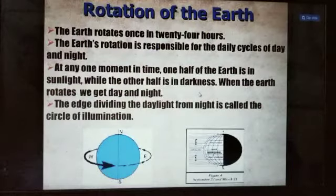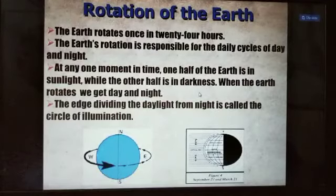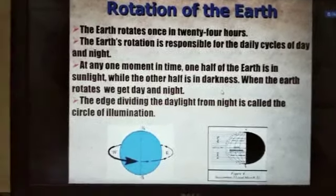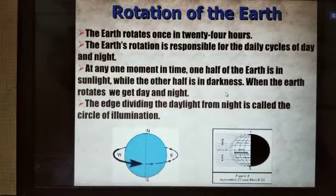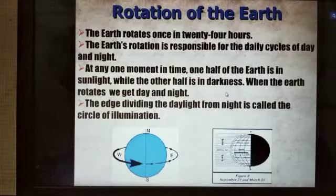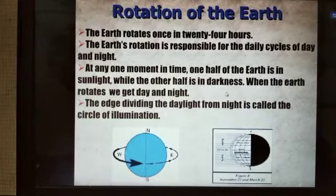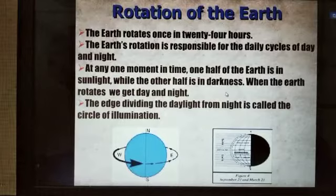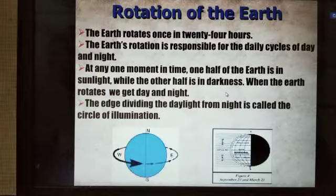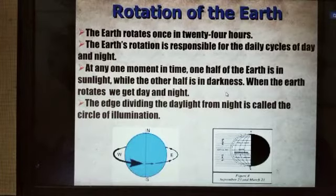Rotation of Earth: it rotates once in 24 hours. It is responsible for the daily cycles of day and night. At any one moment in time, one half of the Earth is in sunlight while the other is in darkness. When the Earth rotates, we get day and night. The edge dividing daylight from night is called the circle of illumination.